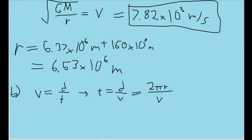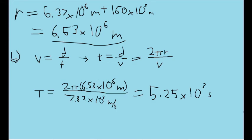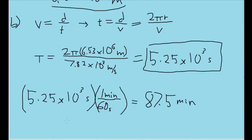Both r and v are variables we found in part A. Plugging in our r value and the speed from part A, we find the period of orbit to be about 5.25 times 10 to the 3 seconds. When dealing with periods of orbit, especially with satellites, it's often more useful to write the result in minutes. Multiplying by the conversion factor of 1 minute per 60 seconds, we find the same period is 87.5 minutes.